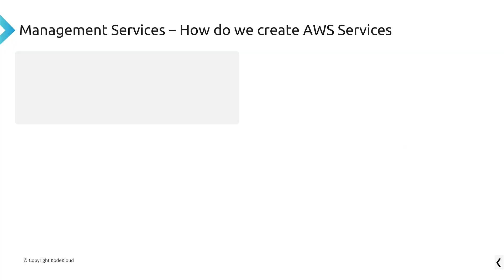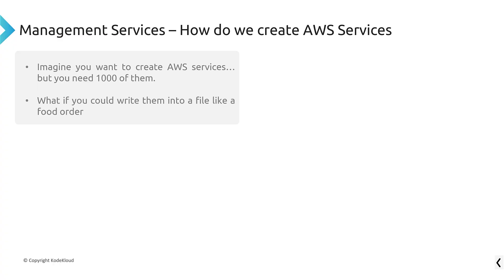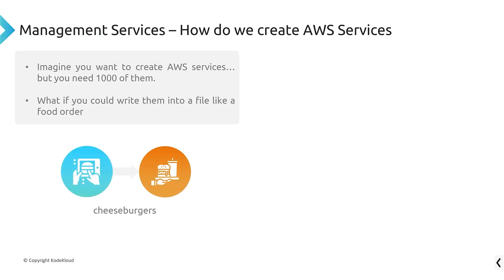Here's the question that this solves: how do we create AWS services? Imagine you want to create AWS services, but you need a thousand of them — maybe a thousand virtual machines, or a hundred virtual machines and 300 Dynamo databases. What if you could write them into a file like you were ordering food, specifying exactly what you want — like a hamburger with cheese, medium well, no pickles?